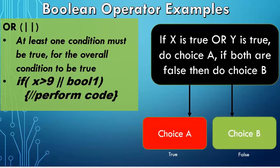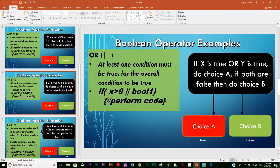With OR, we're saying that one of the conditions must be true. So either x is greater than 9 is true, or Boolean1 is true. If just one of these is true, doesn't matter which one, then we'll perform this code. If they're both true, we'll still perform the code. If both are false, then we will not perform the code.